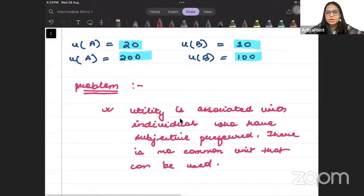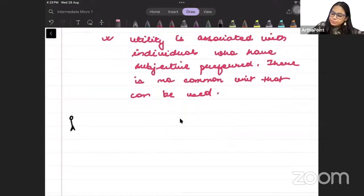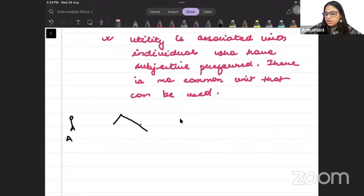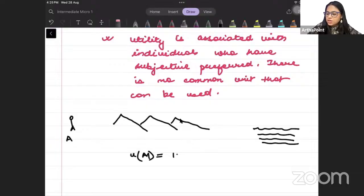Take an example. Just say for example, this is individual A. He likes going to the mountains over going to the beach. He gets a utility from mountains as 100 and utility from beach as 50. So, I ask him, how much utility are you getting from mountains? And he tells me, I get a utility of 100 from mountains. And I ask him, how much utility you get from beach? So, he tells me, I get a utility of 50 from beach.